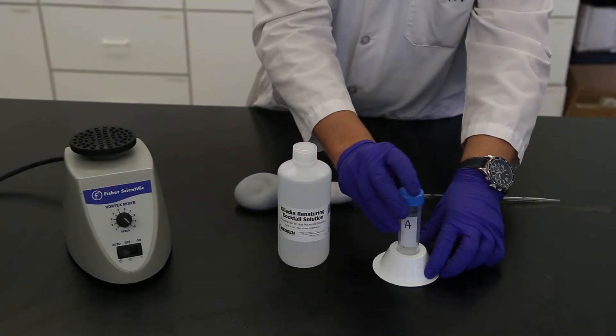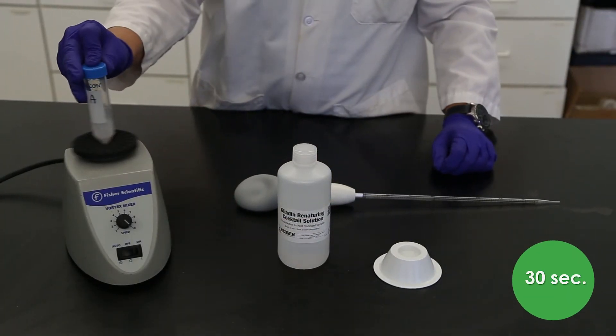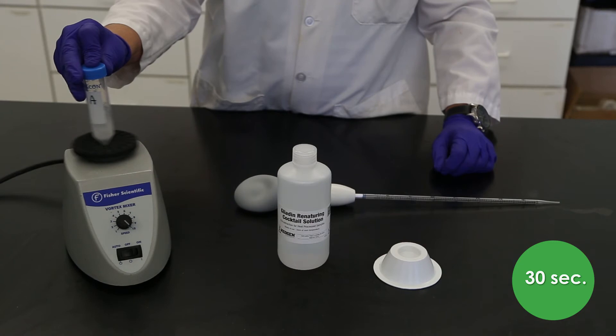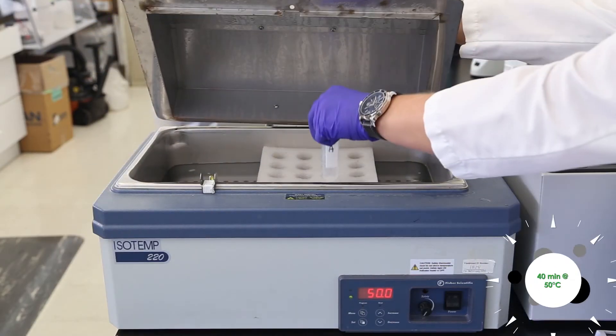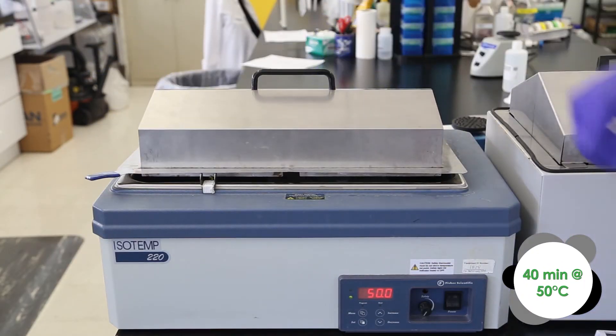Cap the tube and vortex for 30 seconds to homogenize the sample and cocktail solution. Place the tube in a 50 degrees Celsius water bath or oven for 40 minutes.